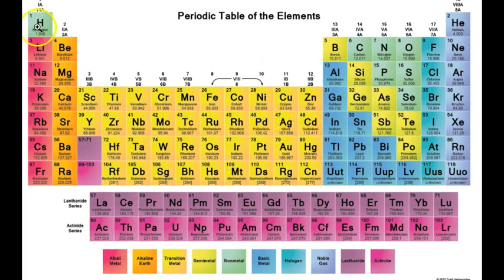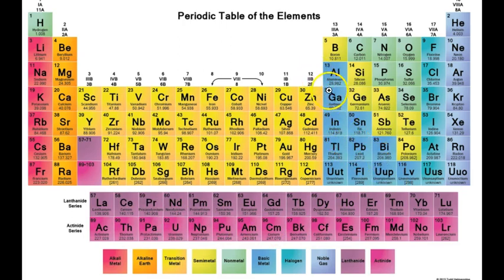So now we've talked about the alkali metals, alkaline earth metals, transition metals, and the inner transition metals. On this periodic table there's also something called the basic metal — sometimes called poor metals, as in they're not the best. For our class, we're just going to lump them in with the transition metals.